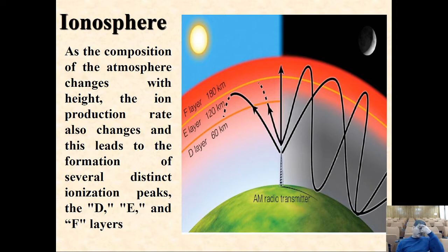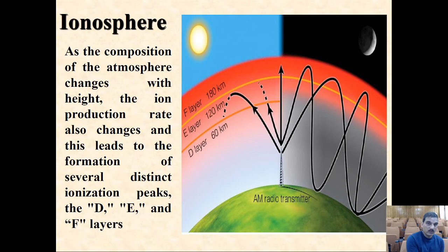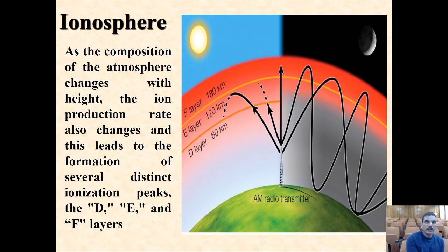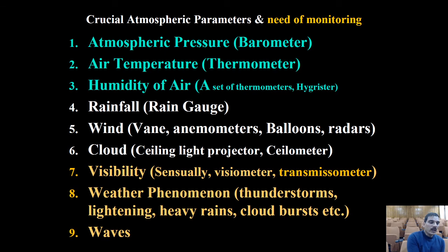The ionosphere extends from about 60 km to 180 km and is further classified into the D layer (60–120 km, daytime only), E layer (120–180 km), and F layer (beyond 180 km). Each layer has distinct properties and the ionosphere is an entirely separate subject of study.